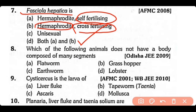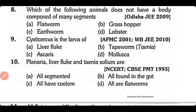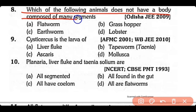Question no.8. Which of the following animals does not have a body composed of many segments: flatworms, grasshopper, earthworm, or lobsters? The correct answer is option A. Flatworms have a non-segmented body that does not consist of many segments.